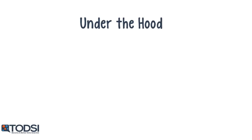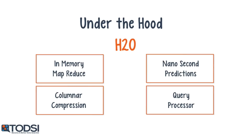Unlike ersats, H2O is provided as a downloadable software package, which you'll need to deploy and manage on your own hardware infrastructure. To help with this, the platform provides an in-memory map-reduce capability, distributed parallel processing, and columnar compression. These additions should help speed up your training significantly.